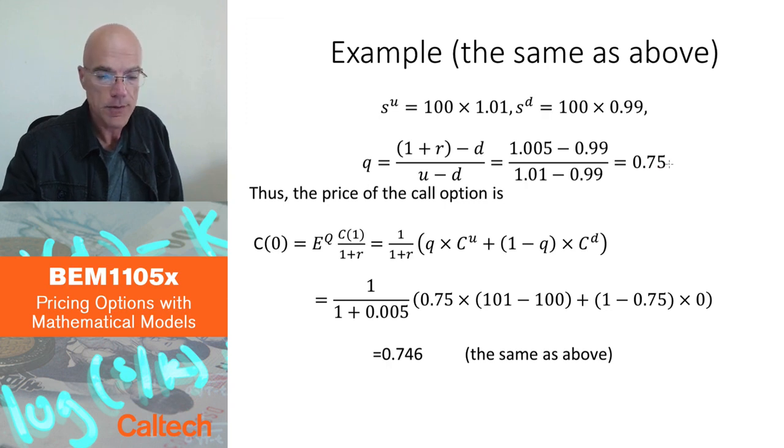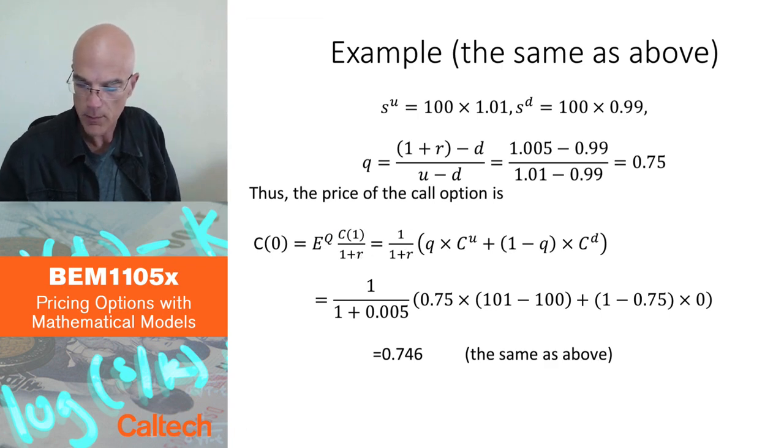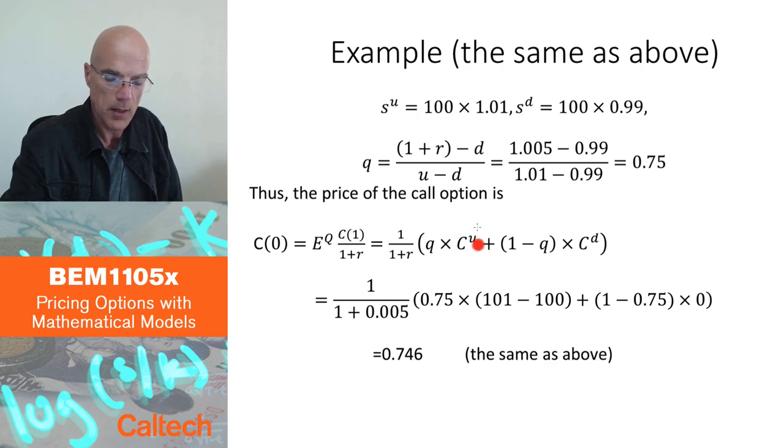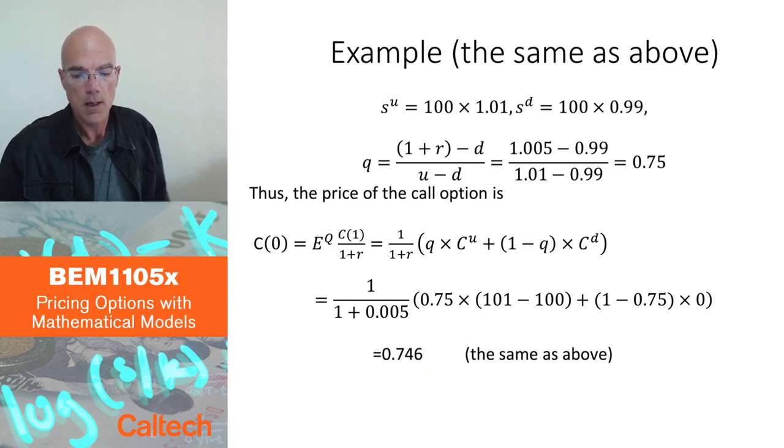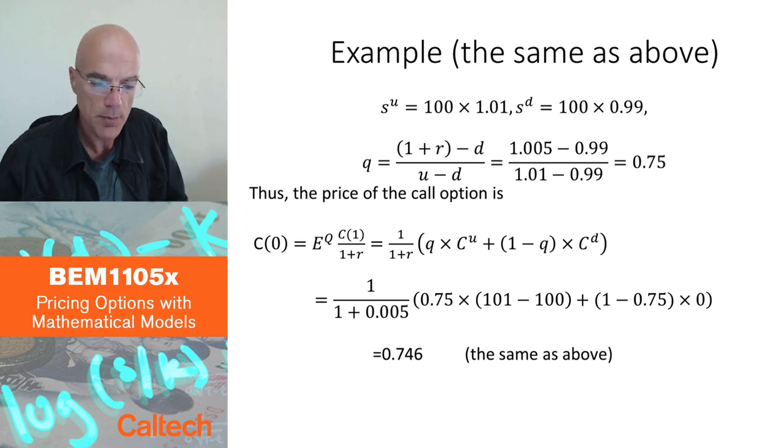And let's check that the formula works. By our theory, the price of the option should be expectation under Q over the payoff divided by 1 plus R. I factor out 1 over 1 plus R. The expectation is up value, which I call C up times Q, plus down value times 1 minus Q. That's the expectation under Q. Well, up value is 101 minus 100, which is just 1, and the down value is 0. So I have 1 over 1 plus 0.05. Q is 0.75 times 1 plus 1 minus 0.75 times 0. If you compute this, you will get 0.746. You can check that. And you should. We already proved this should be the case. But this is just numerically checking in this example that indeed, there is two ways to price this option in this model.